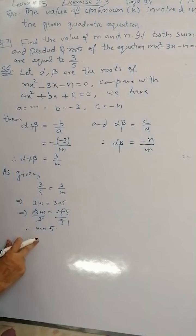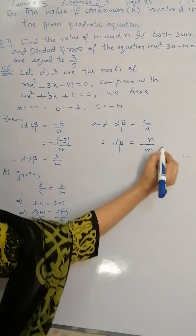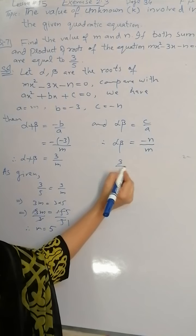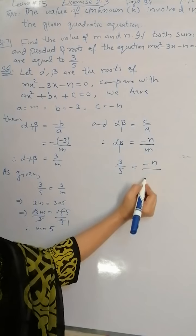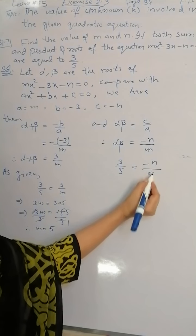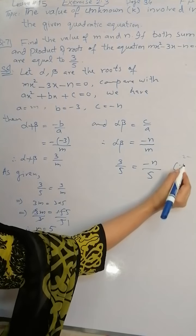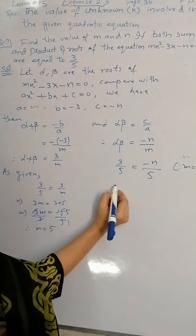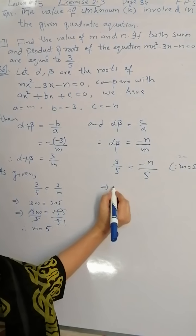Here, now by putting the value of m in this equation, as we know that the product is also equal to 3/5: -n/m, while m is 5. The value of m is 5, which we have already found here. By simplifying this we get...